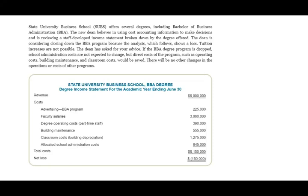State University Business School offers several degrees, including a Bachelor of Business Administration (BBA). The new dean believes in using cost accounting information to make decisions and is reviewing a staff-developed income statement broken down by degree offered. The dean is considering closing down the program because the analysis shows a loss of 150. Tuition increases are not possible — perhaps because the market is competitive and increasing tuition might cause them to lose students. The dean has asked for your advice.